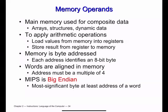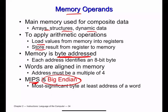Main memory is used for composite data such as arrays, instructions, and dynamic data. To access memory, we use load or store. Memory is byte-addressable. In MIPS, we follow big-endian addressing. With a 32-bit word and 8-bit bytes, word addresses are multiples of four.